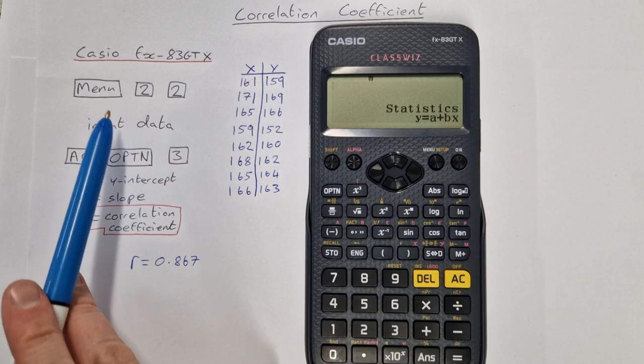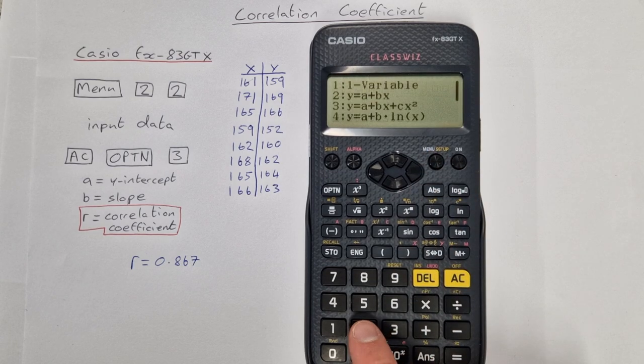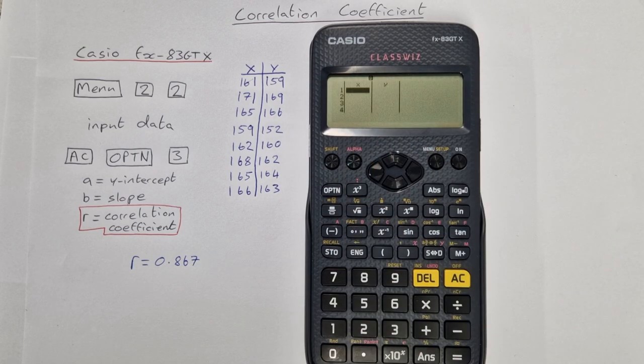So the steps to calculate this: you first of all press menu 2 2, so menu 2 2, and you get this x y table.